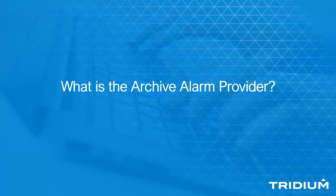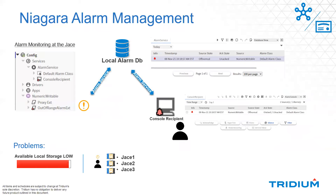So what is the archive alarm provider? I'd like to take a step back and review how we do alarm management and how the alarm space works in Niagara. Starting at the top left, here's a small snapshot of a station running on a JACE. You simply could have any kind of numeric writable and you add an alarm extension to it. It's the alarm extension that's monitoring the condition you're wanting to alert the user to. Once that condition is met, it's the alarm service that generates this alarm record and accesses the local alarm database in the station. This is a native Niagara alarm database.